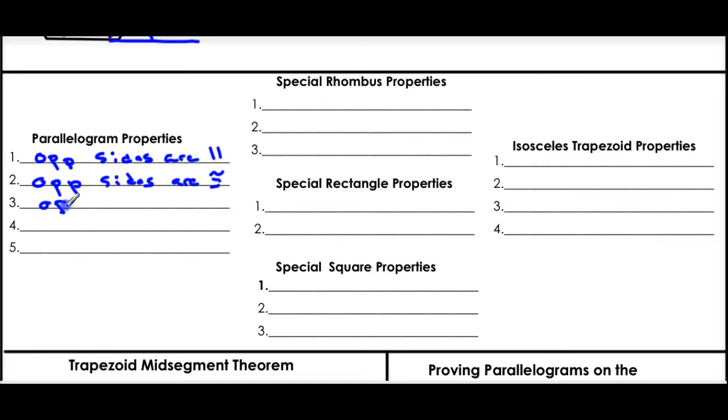Opposite angles are congruent. So the first three are pretty easy. Opposite sides, opposite sides, opposite angles. The adjacent angles are supplementary. Those are the angles that are next to each other. So if I had a parallelogram, the adjacent ones would be the ones next to each other, and the opposite angles would be across. And then finally, diagonals bisect each other, or they cut each other in half.